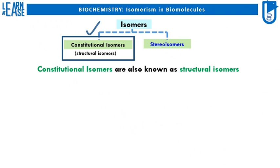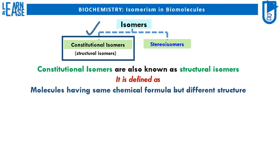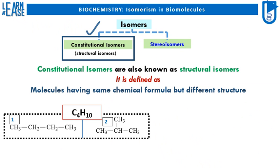Constitutional isomers, also known as structural isomers, are defined as molecules having the same chemical formula but different structure. For example, two compounds shown in the image have different structures but the same chemical formula C4H10, so these two compounds are known as constitutional isomers or structural isomers.